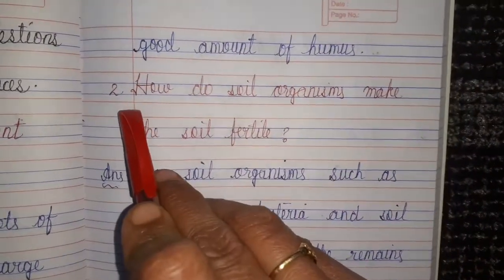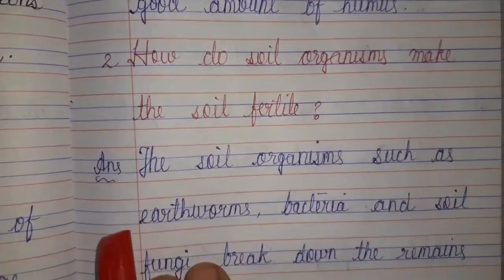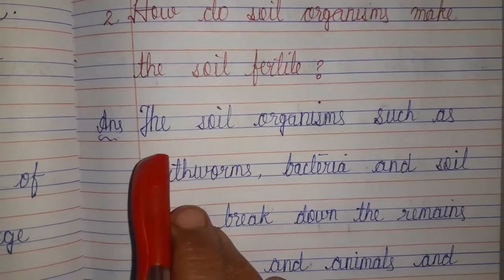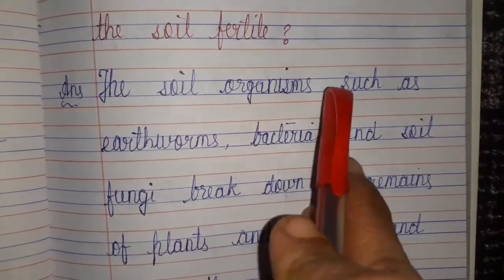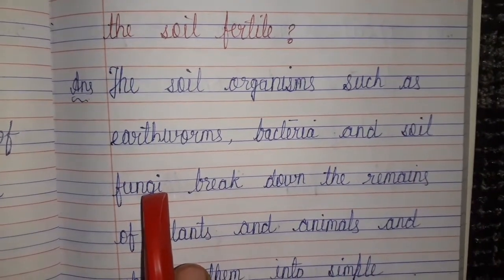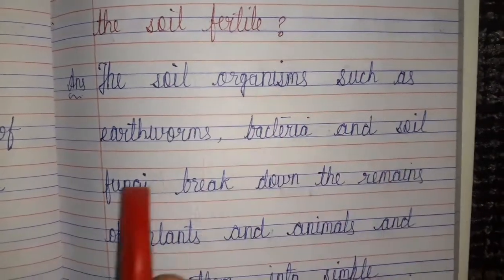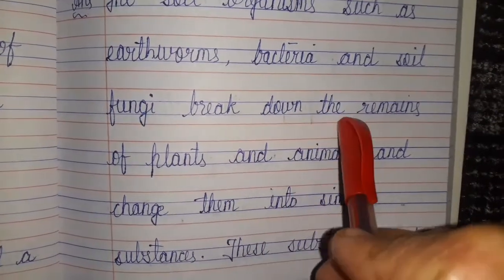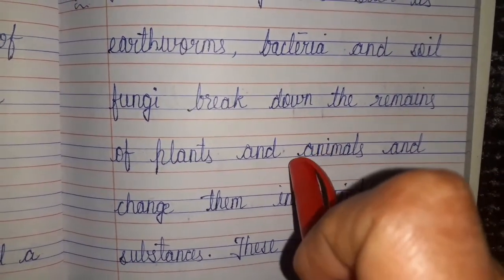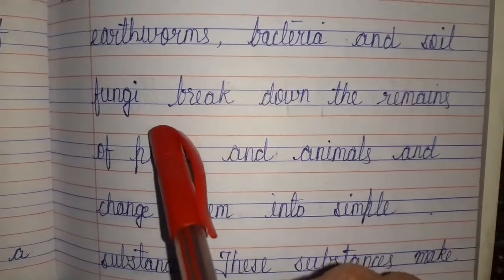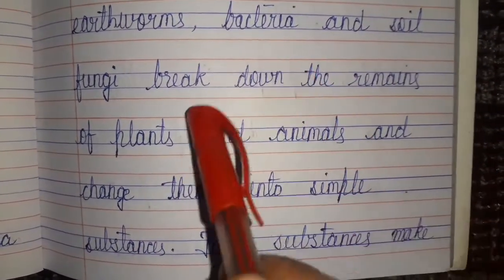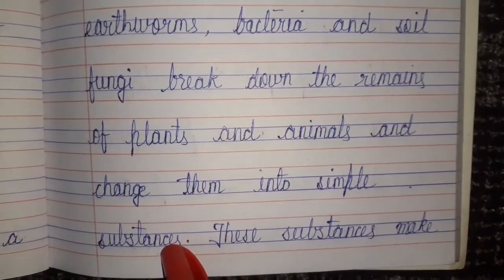Second question: how do soil organisms make the soil fertile? What is the role of soil organisms and how do they make the soil fertile? The answer is: the soil organisms such as earthworms, bacteria, and soil fungi break down the remains of plants and animals and change them into simple substances, making them part of the soil.